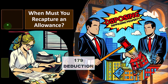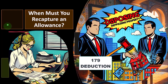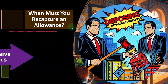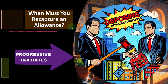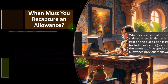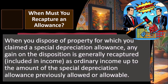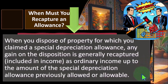With the 179 deduction, we also saw an issue regarding the property being more than 50 percent used for business versus personal use. If that ratio drops under 50 percent, you have to make an adjustment. These are some of the complications that arise when the law gets complex — with different sets of progressive tax rates, and the interplay of accrual and cash concepts. So when you dispose of property for which you claimed a special depreciation allowance, any gain on the disposition is generally recaptured and included in income as ordinary income, up to the amount of the special depreciation allowance previously allowed or allowable.